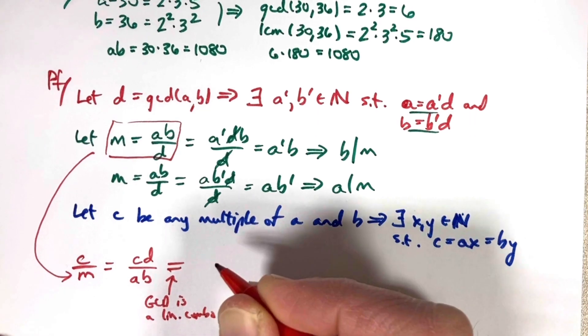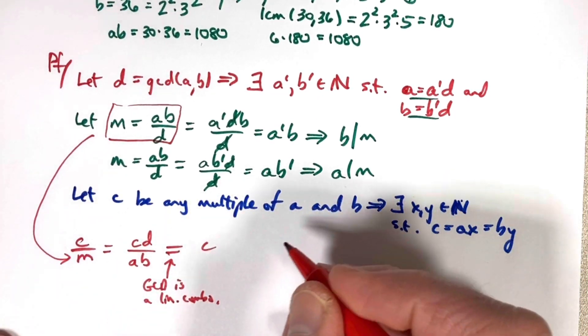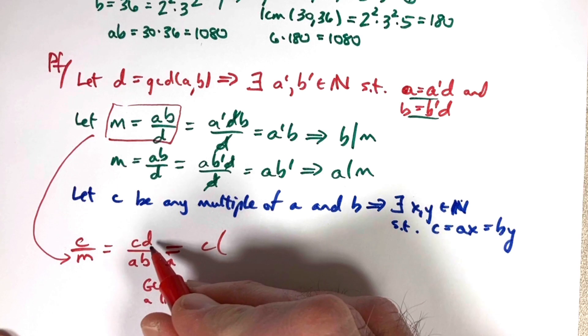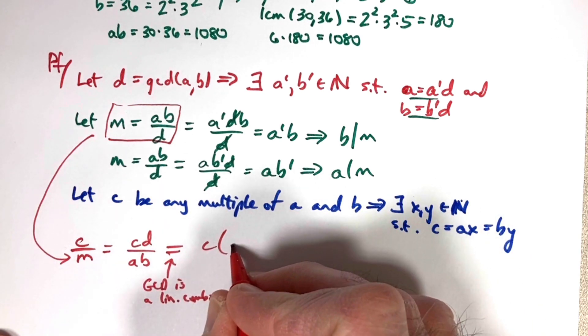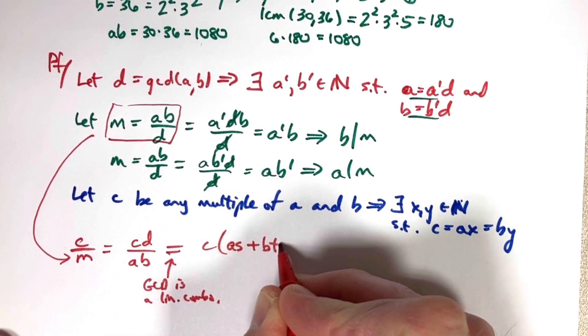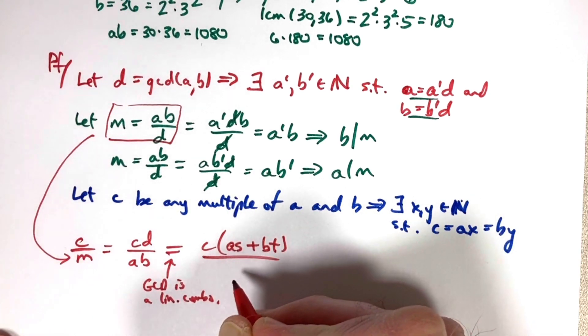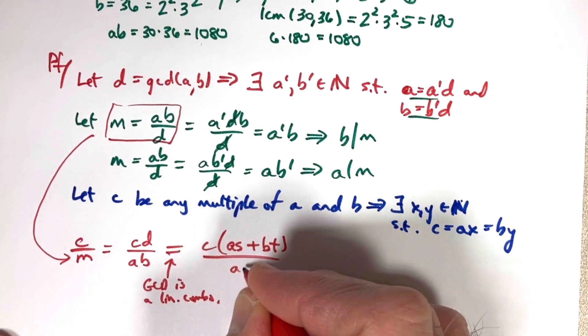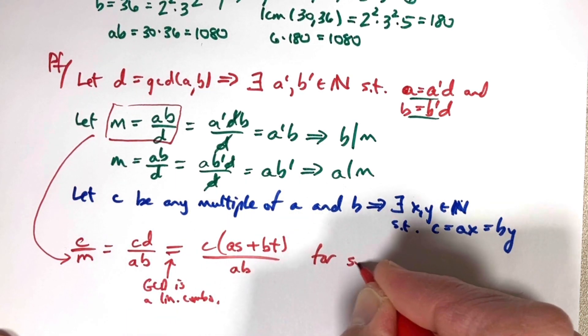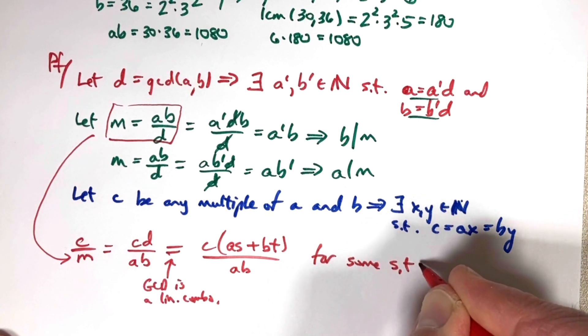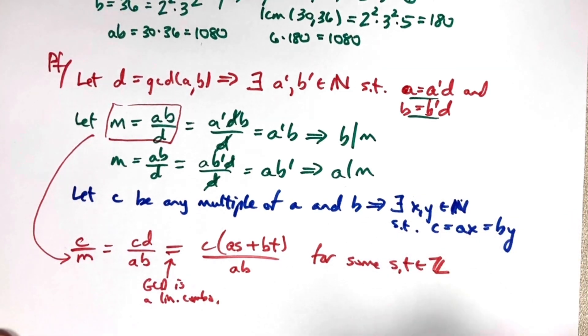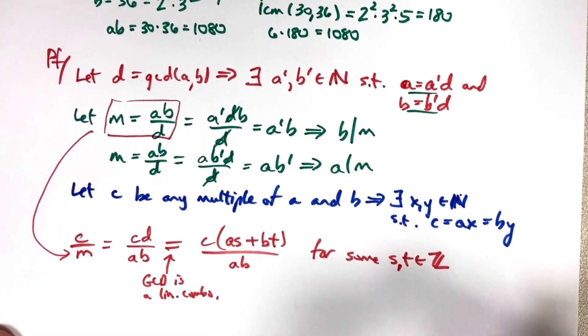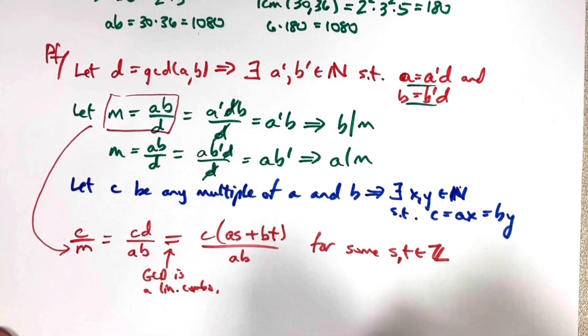But this is also where you can use the GCD is a linear combination theorem. GCD is a linear combo. To say there exist integers, call them say S and T, such that D equals A times S plus B times T. Now, D is a positive number. A and B are positive numbers. One of these two numbers, S or T, would have to actually be negative. They are integers, not necessarily natural numbers. This is the key for some S and T, not in N in general, but in Z. The integers, one of these will have to, in fact, be negative.